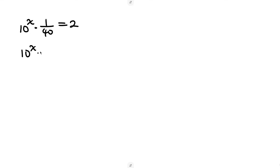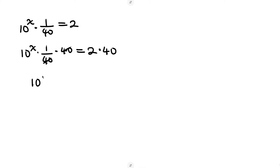Now let's eliminate the fraction by multiplying both sides by 40. The 40 cancels on the left, giving us 10^x, and on the right we get 2 times 40, which is 80. So 10^x = 80.